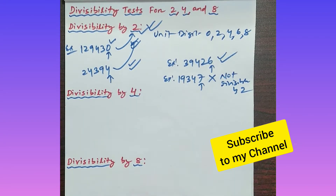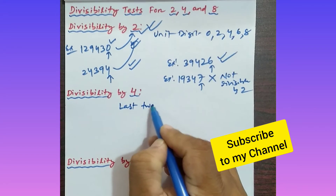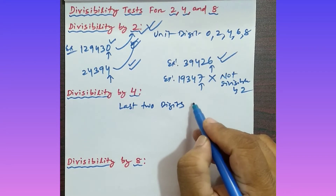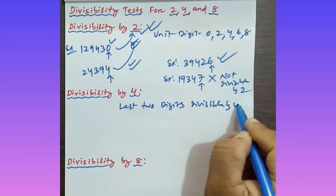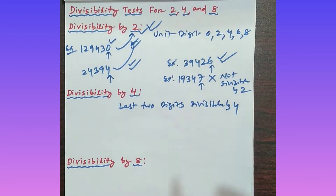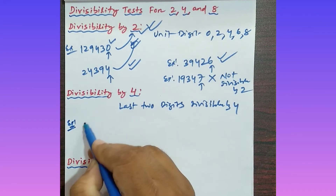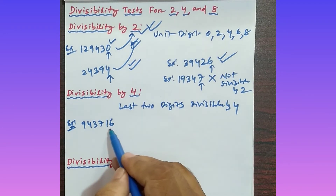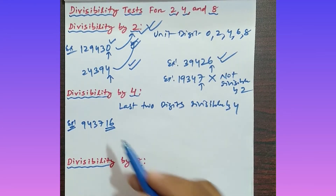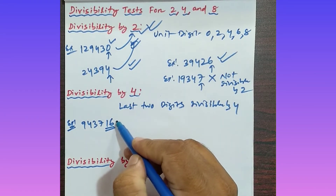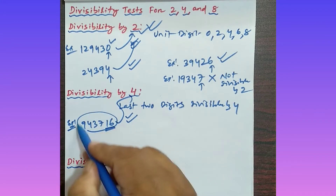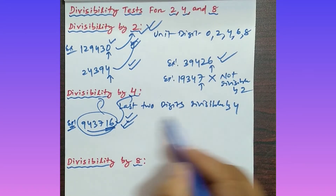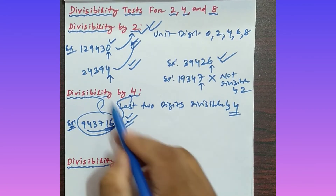For divisibility by 4, the rule is: look at the last two digits of the number. If the last two digits are divisible by 4, then the whole number is divisible by 4. For example, take 943716. The last two digits are 16. Since 16 is divisible by 4, the whole number is also divisible by 4.